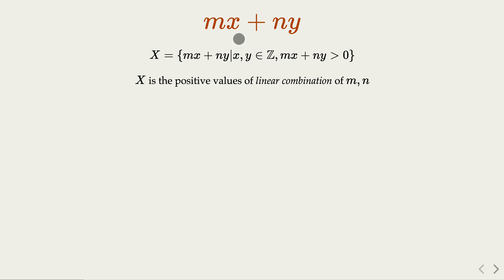Why? Because x, y can just be 1. So m plus n is going to be greater than 0, so it has at least one element.